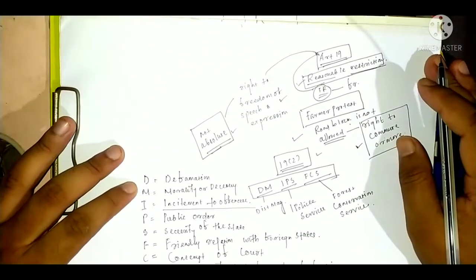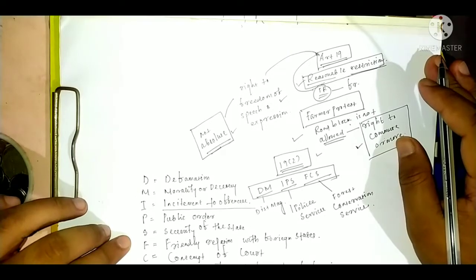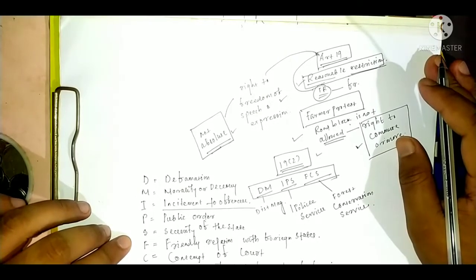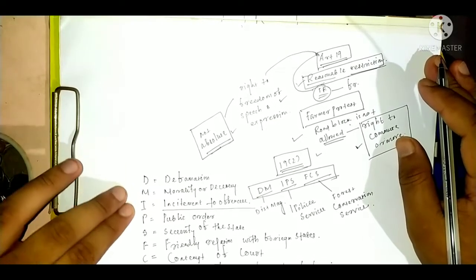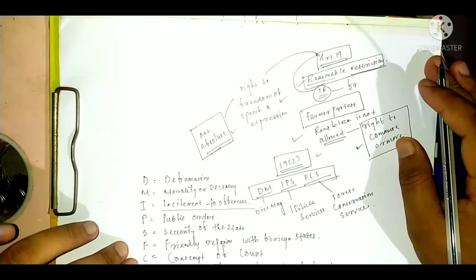Sometime the question will be like, which are the reasonable restrictions present in Article 19 clause 2 or not? In that case, you can remember it easily.